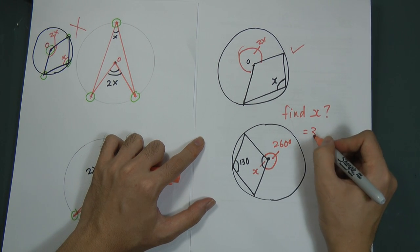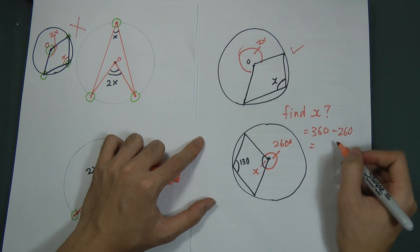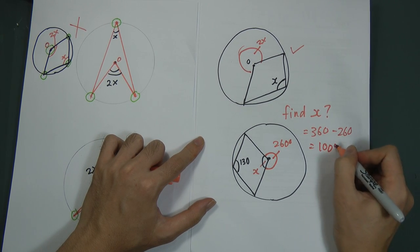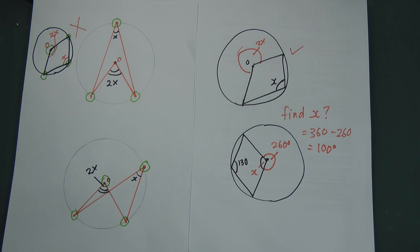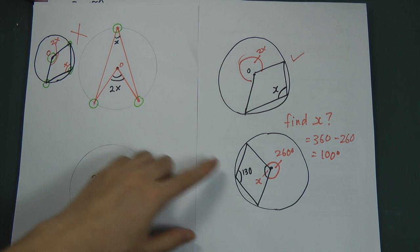So therefore, if this is 260, one circle is 360, so x will equal to 360 minus 260. Therefore x will equal to 100. Okay, this is the law. I just confused a little bit about this law.